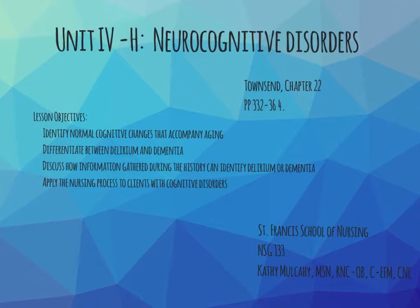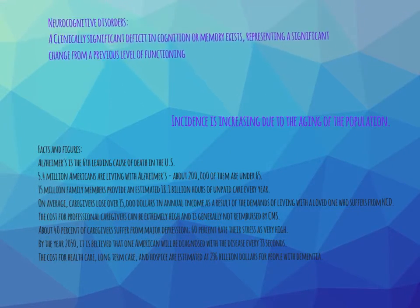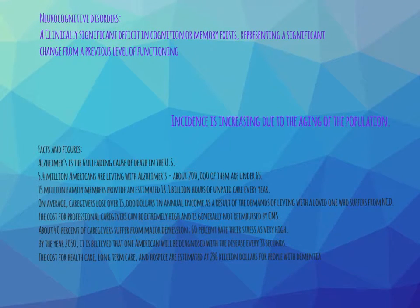It's also helpful to refer to some websites. The Alzheimer's Association has a very good one with clear, quality information on these disorders. As an introduction to this unit, the textbook defines neurocognitive disorders as a disorder in which a clinically significant deficit in cognition or memory exists, representing a significant change from their baseline. That covers deliriums, which have a more abrupt onset, and dementias, which have a more insidious or slower onset.